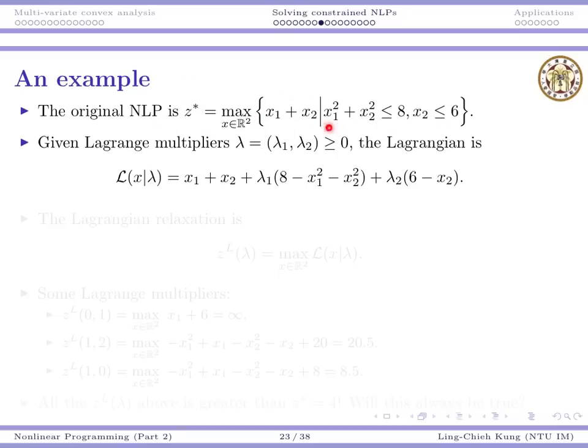Because there are 2 constraints, the Lagrangian, by definition, needs 2 Lagrangian multipliers or Lagrange multipliers. The first multiplier is associated with the first constraint and the second for the second.